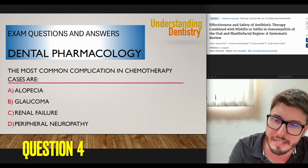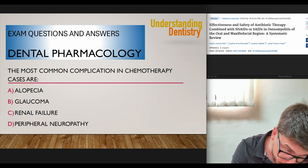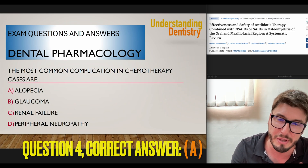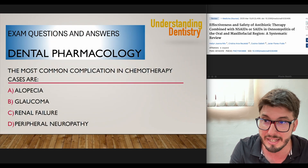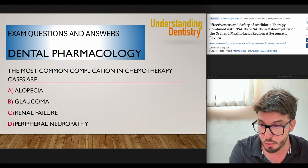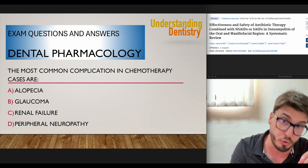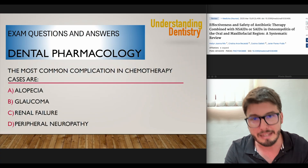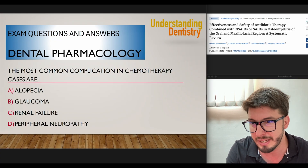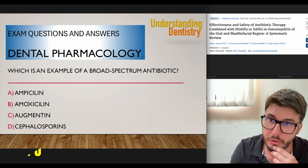The most common complication in chemotherapy cases — the correct answer is when the patient's hair is falling out: alopecia. Glaucoma, renal failure, and peripheral neuropathy are not common complications of chemotherapy. Don't forget that chemotherapy is teratogenic, so it should be avoided in pregnant women. Methotrexate can cause oral ulcerations, and there is also the risk of osteonecrosis from chemotherapy — something you need to know before performing an extraction, for example.